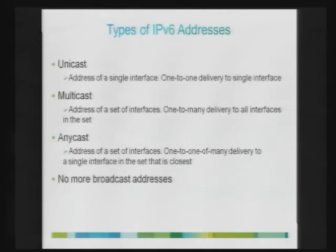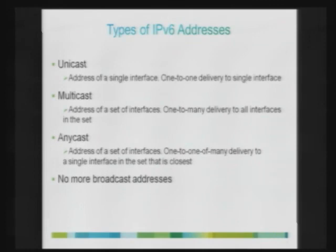Anycast addresses can be assigned to multiple interfaces belonging to multiple nodes, all providing the same kind of service — for example, a home gateway for mobile service providers. Routers configured to route the anycast address identify those addresses in their configuration and forward the packet to the nearest node. So a packet destined for an anycast address can reach any of the nodes assigned that address, and the router forwards to the nearest available one.